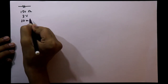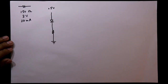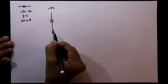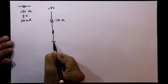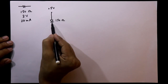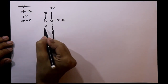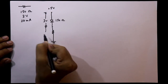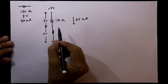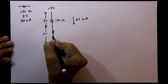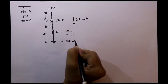We want to glow this LED at 5 volts, so we need to connect a series resistor. We know the internal resistance of the LED is 150 ohms. The total voltage is 5 volts; the LED drops 3 volts, so the remaining voltage drop across the resistor must be 2 volts. With 20 milliamperes current, the resistor value is V/I = 2 / 20mA = 100 ohms.